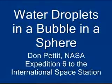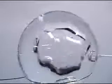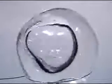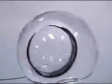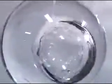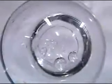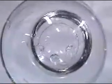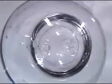Water droplets in a bubble in a sphere. Here we have a sphere of water, 75 millimeters in diameter, with an air bubble inside, about 35 millimeters in diameter, and we inject water droplets anywhere from 1 to 8 millimeters in diameter into the bubble, and look at the resulting collision dynamics where they collide with each other and the walls.